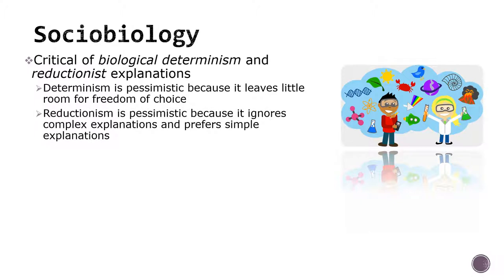Reductionism means that the researcher or theorist looks for the simplest explanation, often ignoring complexity. This can mean that a lot of things that might help us understand human behavior gets lost. It may be that a simple explanation can predict a great deal of human behavior, but it doesn't account for human variation. Again, this tends to be a pessimistic view because of its exclusive nature.